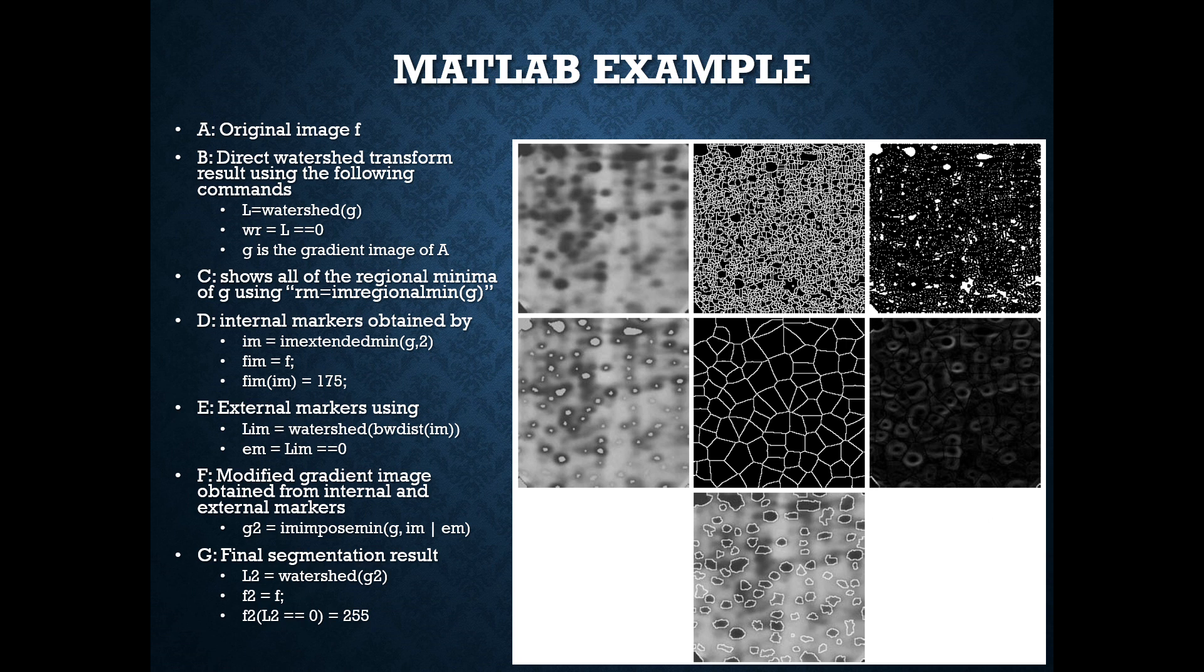By taking a MATLAB example, we can say that the first image is the original image. The second image is the direct watershed transform result using the following commands. If we wanted watershed transformation, we need to apply the command of watershed of the original image.